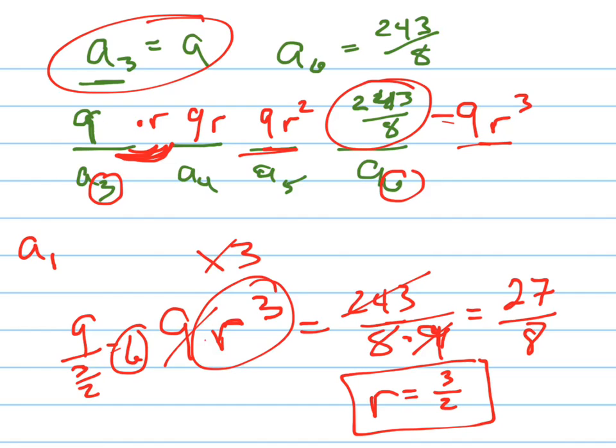And then divide that, that's a sub 2. So a sub 2 we just found is 6. And what's a sub 1? a sub 1 is going to equal 6 divided by 3 halves. That's 4. So a sub 1 equals 4.